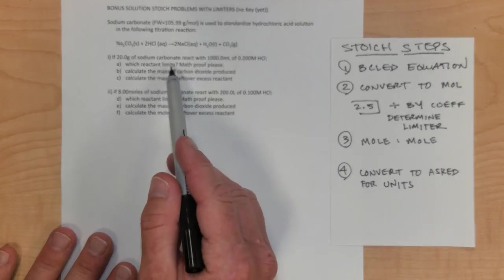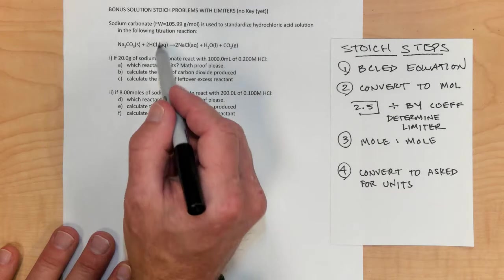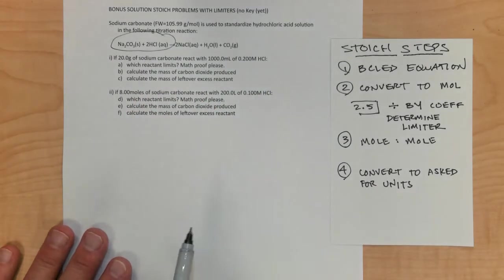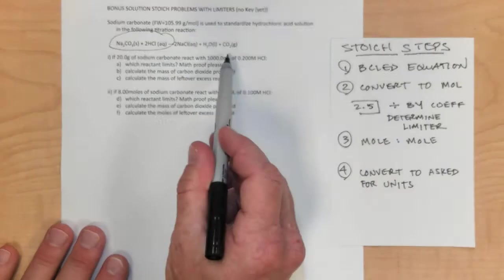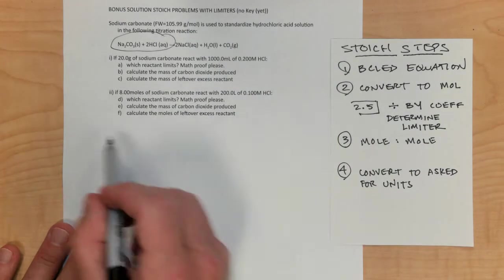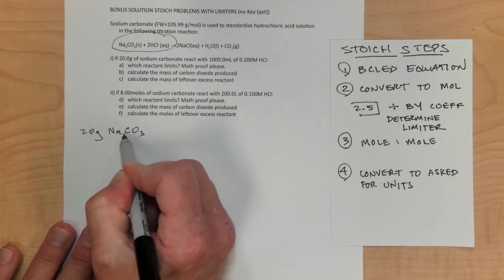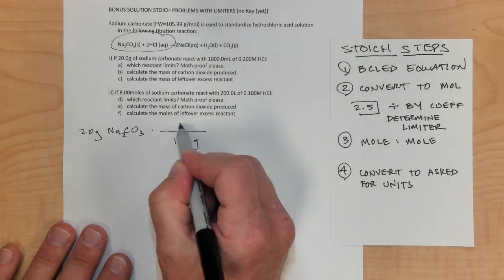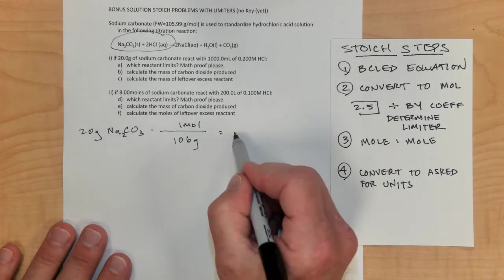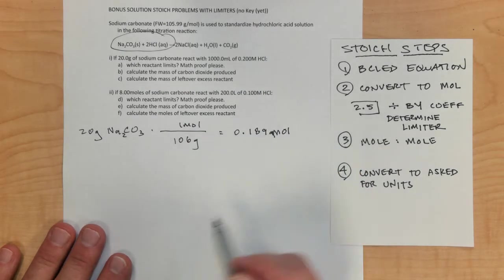In number 1, they say 20 grams of sodium carbonate reacts with 1000 milliliters of 0.2 molar HCl. We're given 2 amounts, so we definitely need to find the limiter. Step 1: write the balanced chemical reaction — done for us. Step 2: convert to moles. We have 20 grams of sodium carbonate; sodium carbonate is 106 grams per mole, so that gives us 0.189 moles of sodium carbonate.